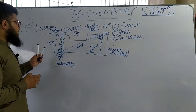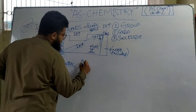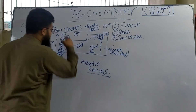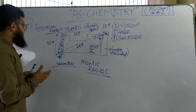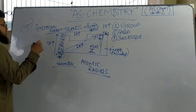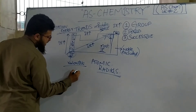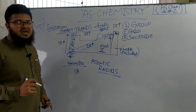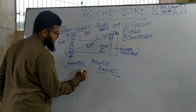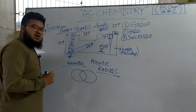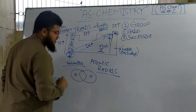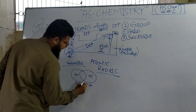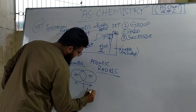Apart from ionization energy trends, let's discuss what happens to the atomic radius as you go across the period and up the group. Atomic radius basically means the size of an atom. The radius of an atom cannot be directly measured, so what scientists do is take a whole molecule — for example, hydrogen — and measure the distance between the nuclei. Half of that bond length is considered the radius of that atom.